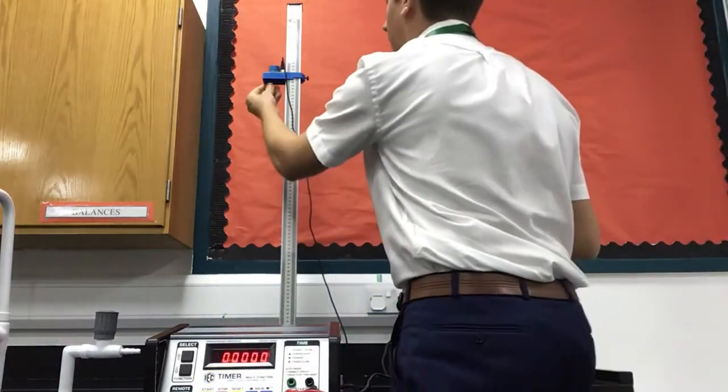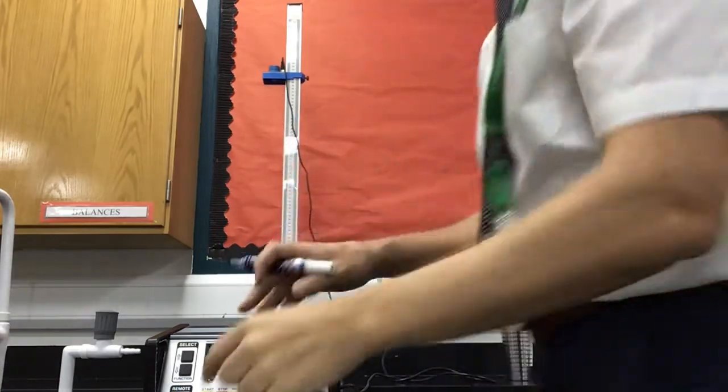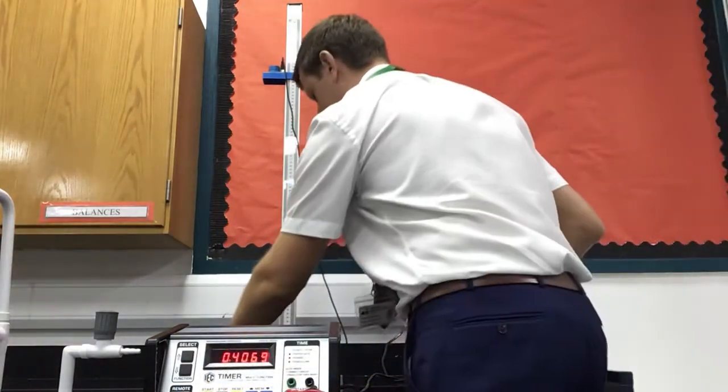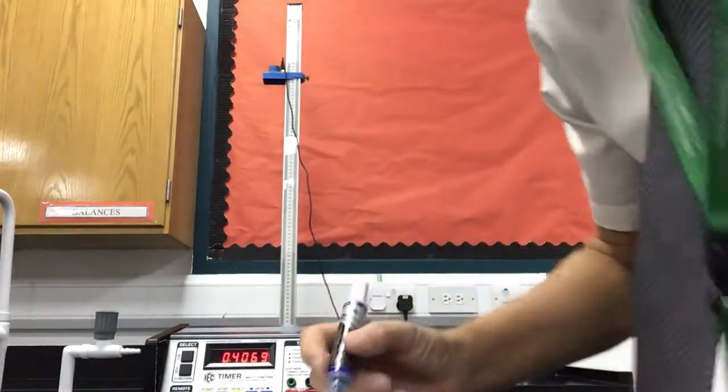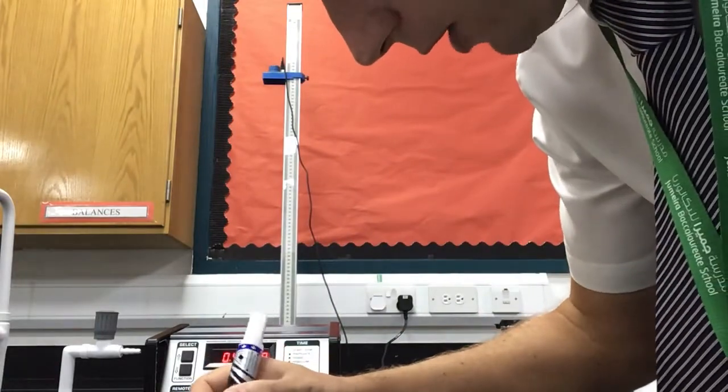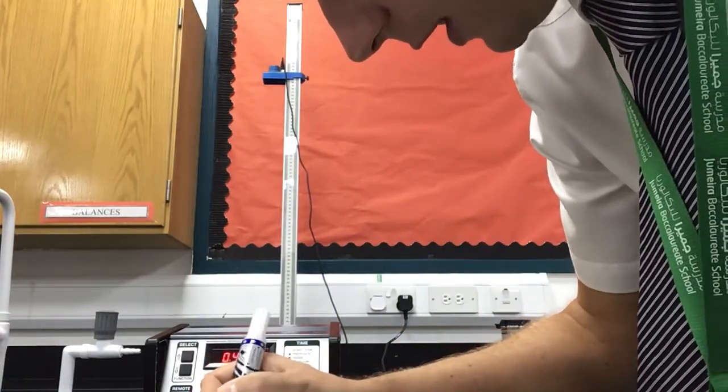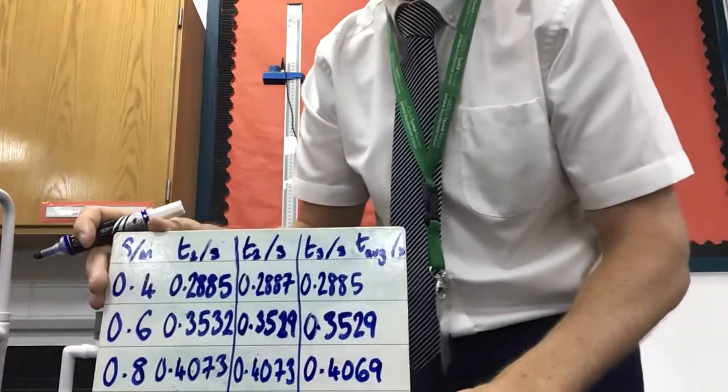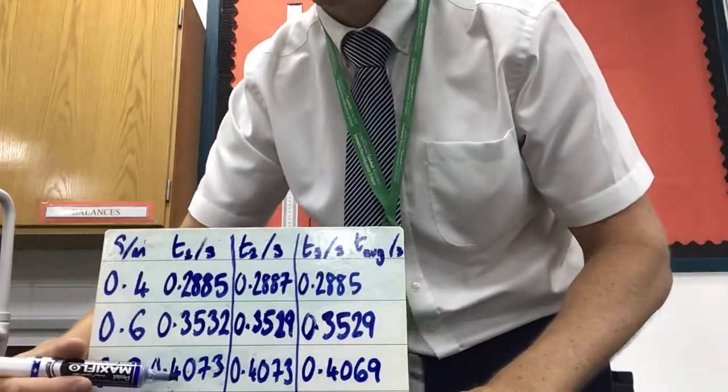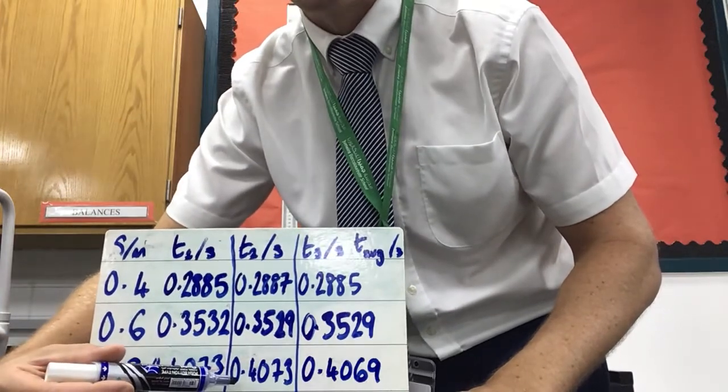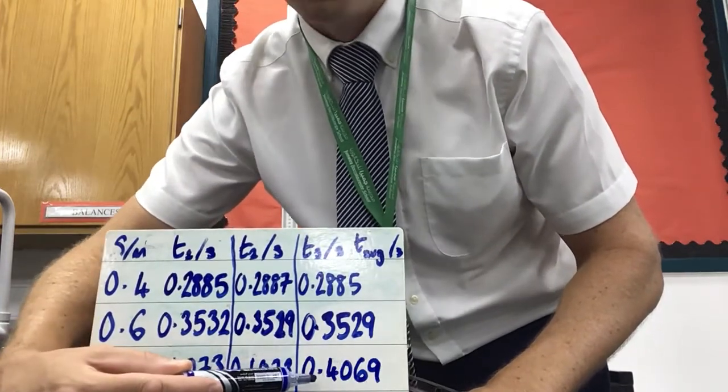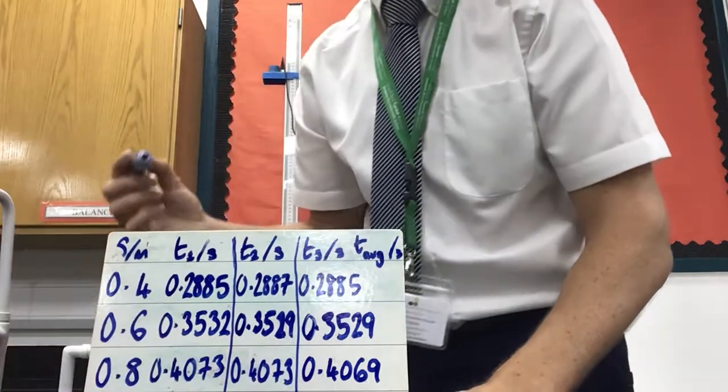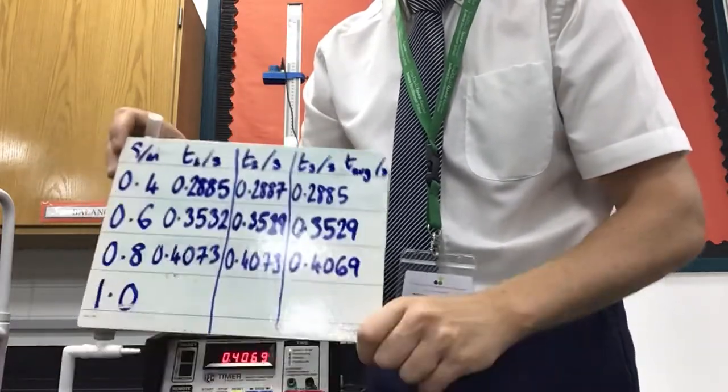Reset. Ball bearing. Drop. 0.4069. So here's our three readings for this one. 0.4073, 0.4073, 0.4069. Those are our three readings. Last one's going to be one metre.